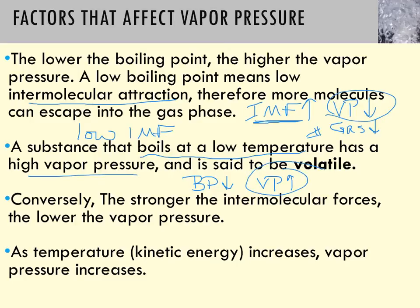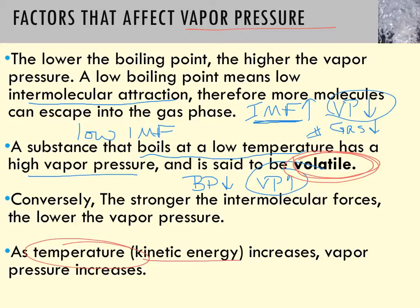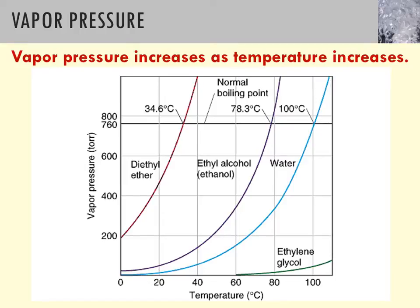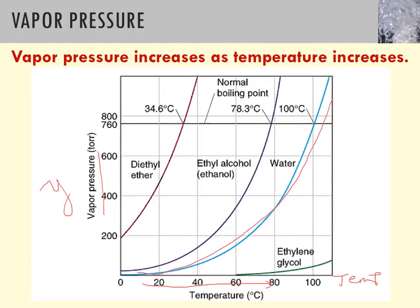Molecules that have low boiling points and high vapor pressures are called volatile — that's a vocabulary word you need to know. Intermolecular forces affect vapor pressure. The second factor that affects it is temperature. As you increase temperature, you're giving more kinetic energy to the molecules; therefore a higher percentage of them can escape from the liquid phase into the vapor phase, which increases vapor pressure.